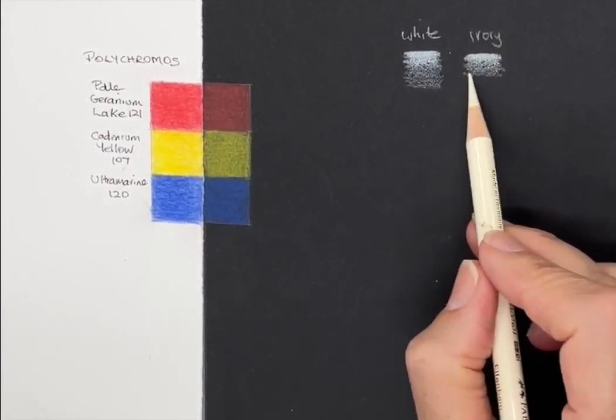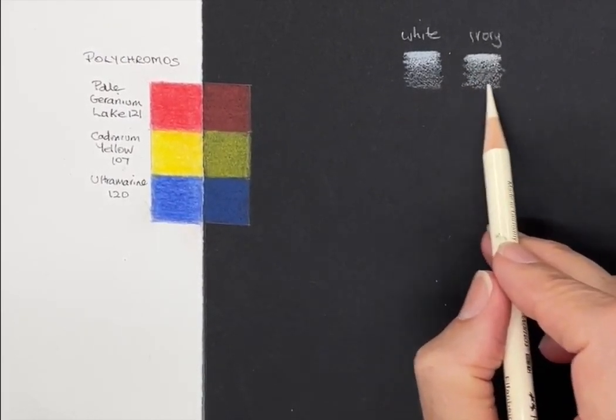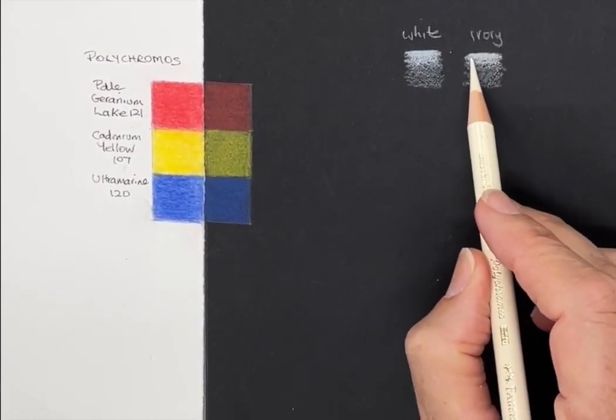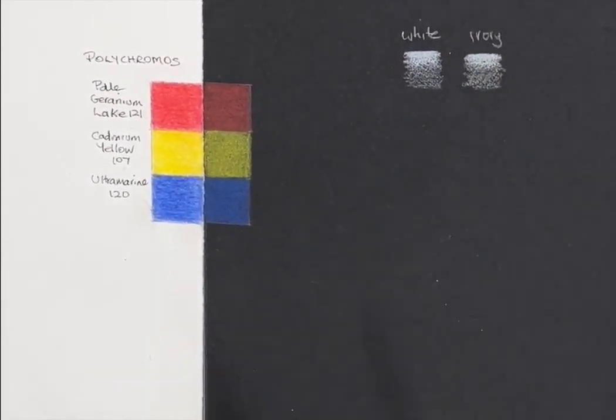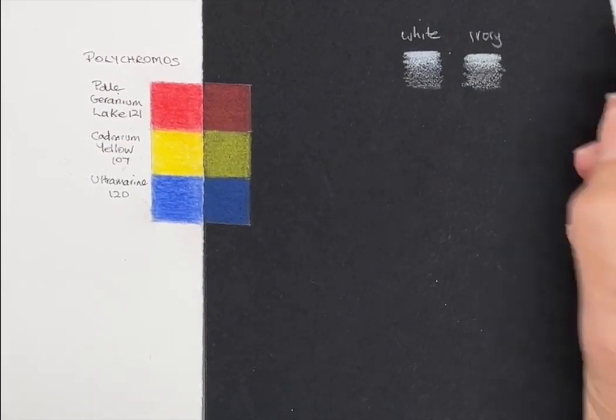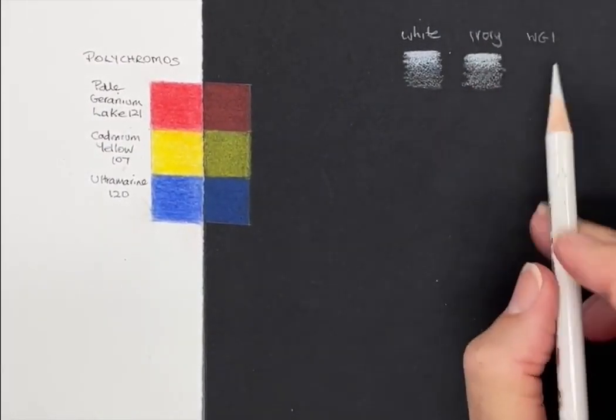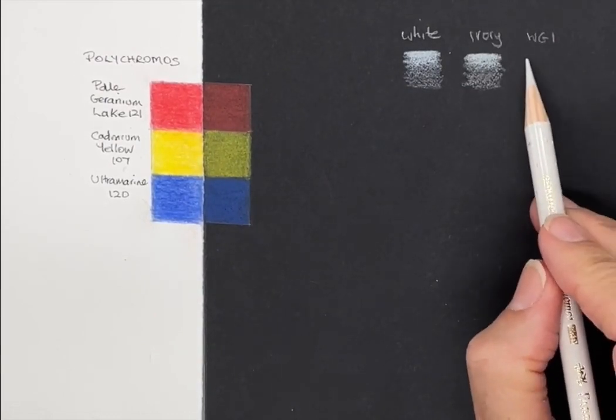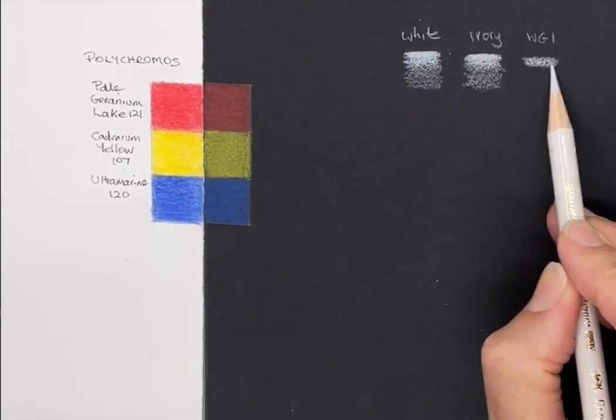Now this is the ivory. As you can see, there's not a lot of difference, it's just slightly warmer than the white. You can see the texture of the paper, it's quite interesting, and that's why it lends itself well to fur. This is warm gray one, and as you can see it does look quite a bit cooler.